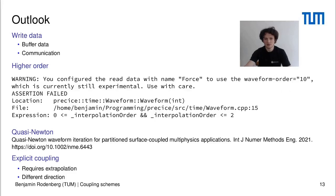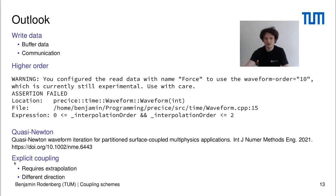In our paper on quasi-Newton waveform iteration, we also discussed how quasi-Newton schemes and time interpolation might merge together, and this is also something we still have to implement in PreSize. Finally, explicit coupling is a totally different story because here we would require extrapolation and not interpolation of data.